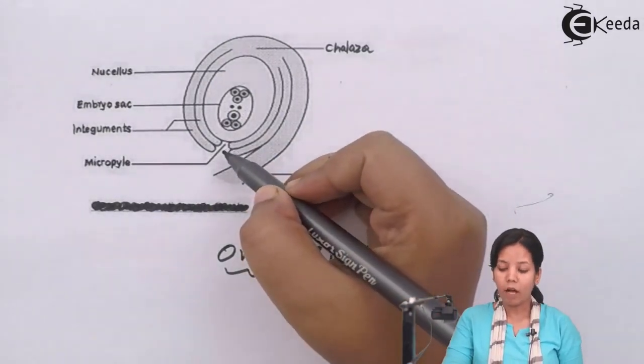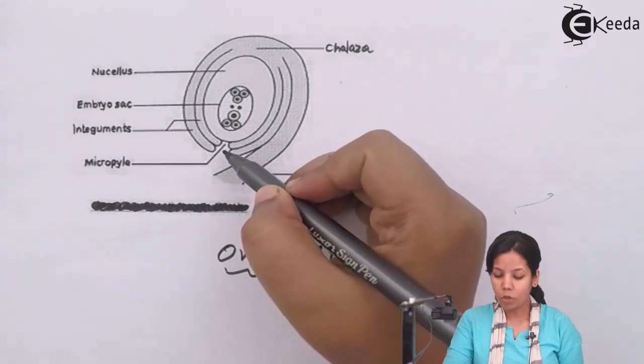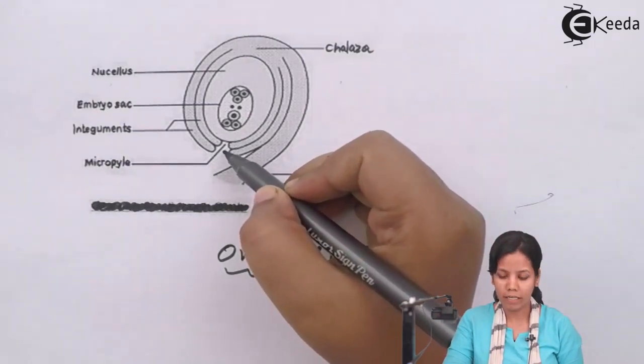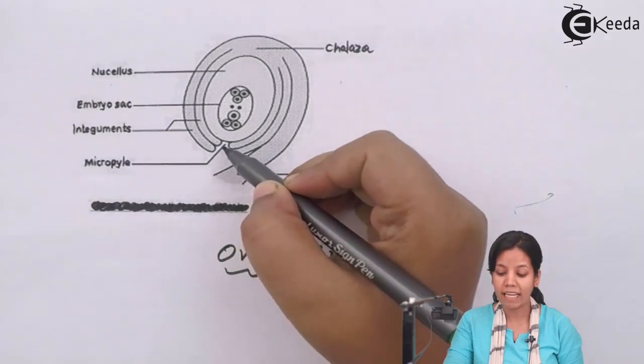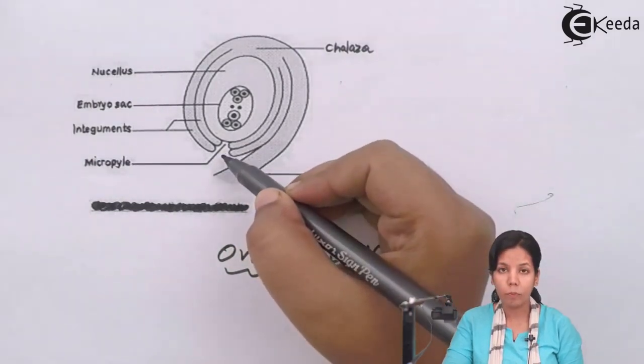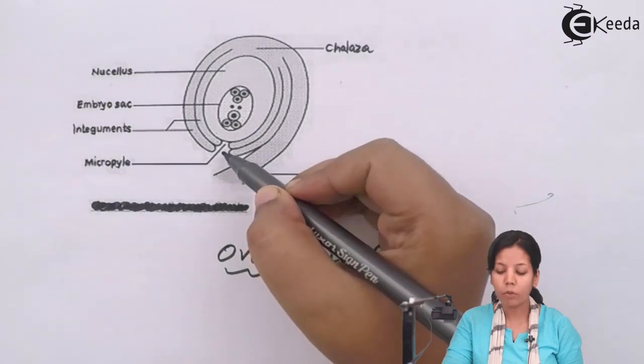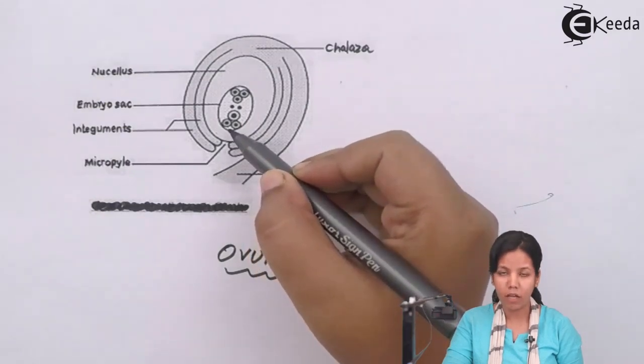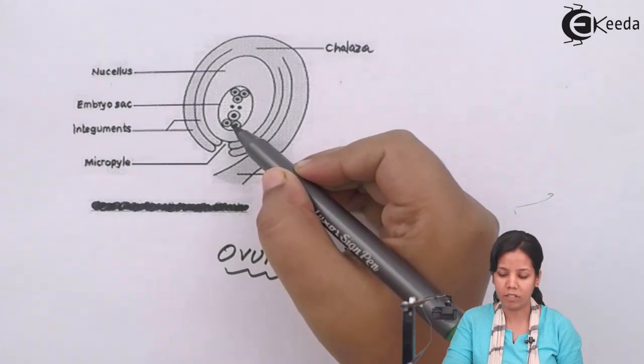The micropyle part is the part through which the pollen grain gains entry inside the egg cell. Now this is the egg cell and through micropyle the pollen grain finds a pathway to gain entry. This is the pathway for fertilization.